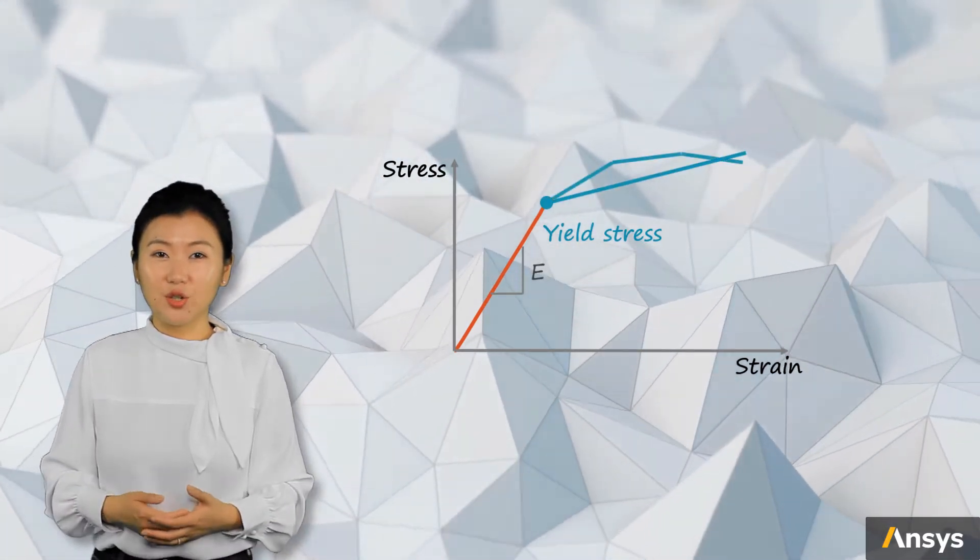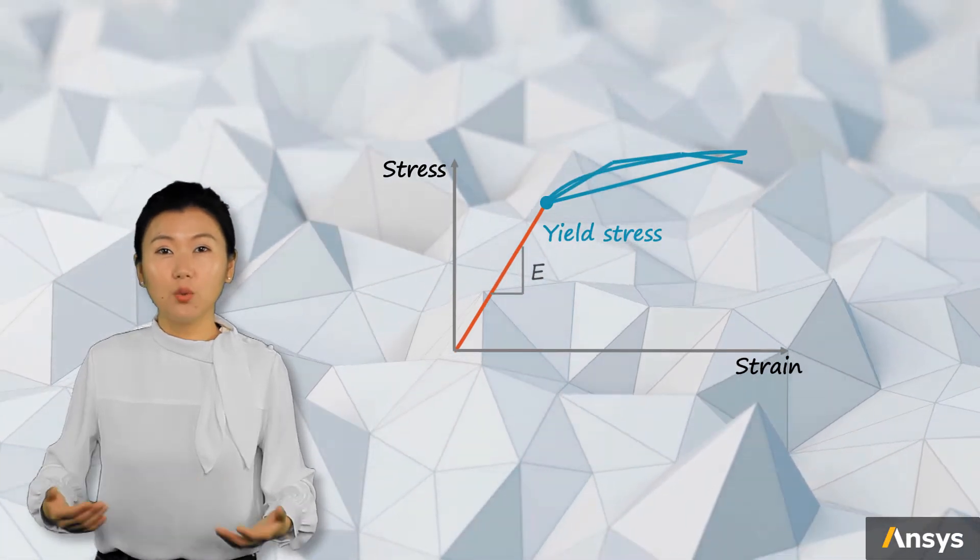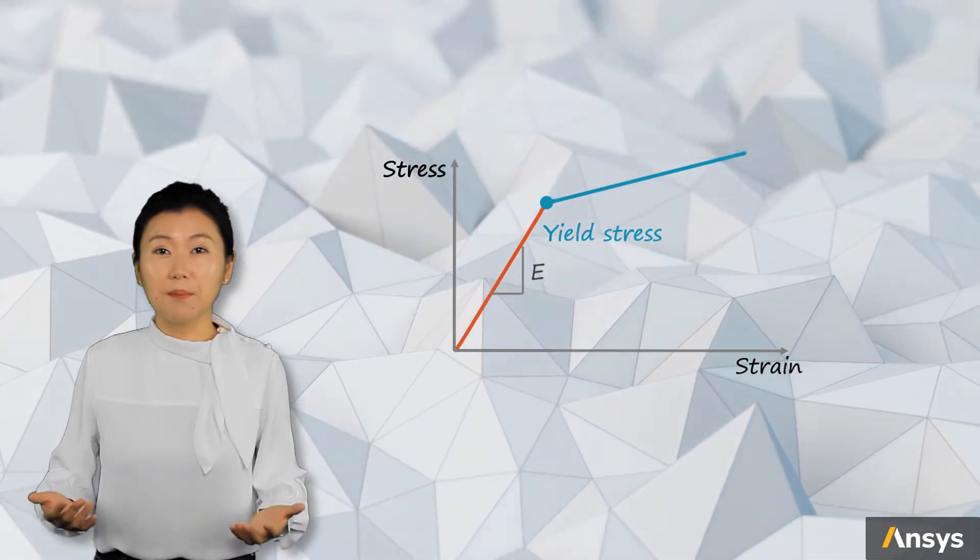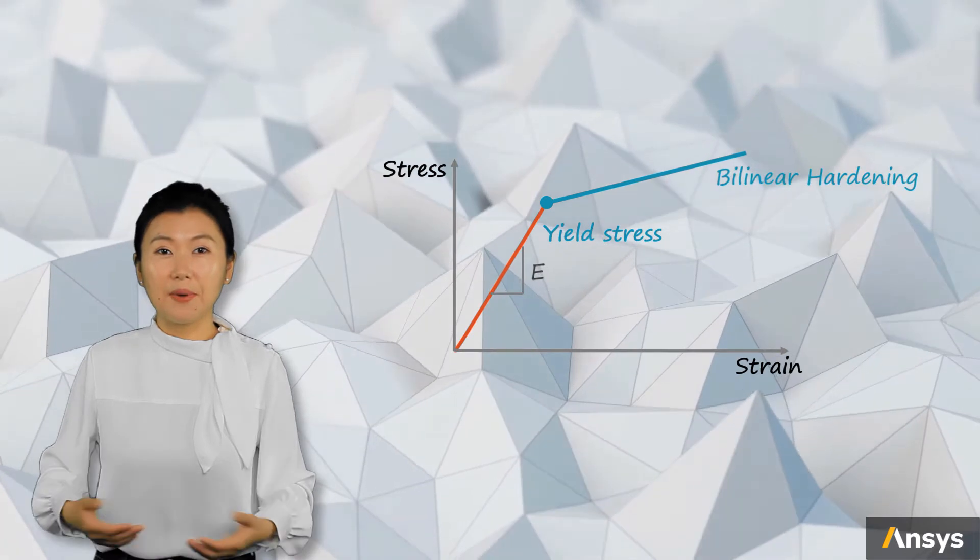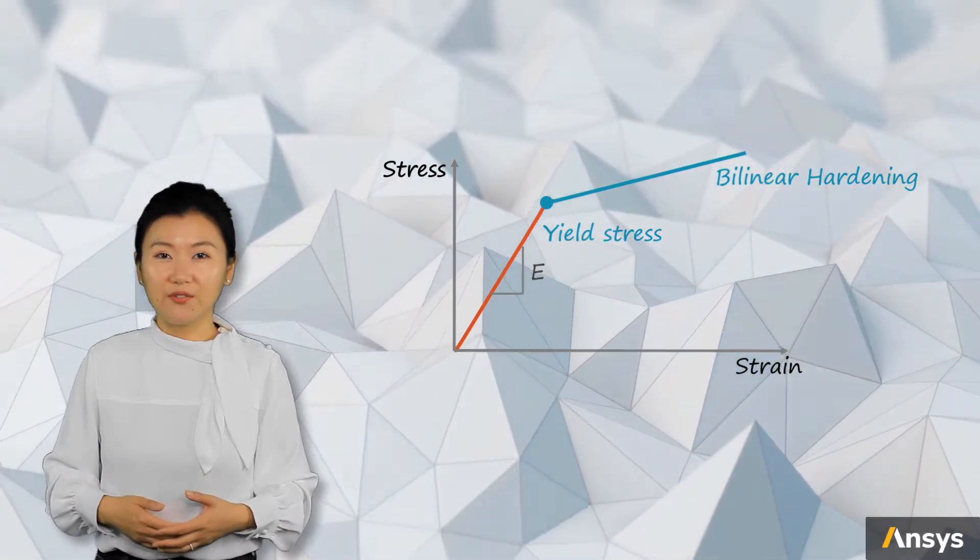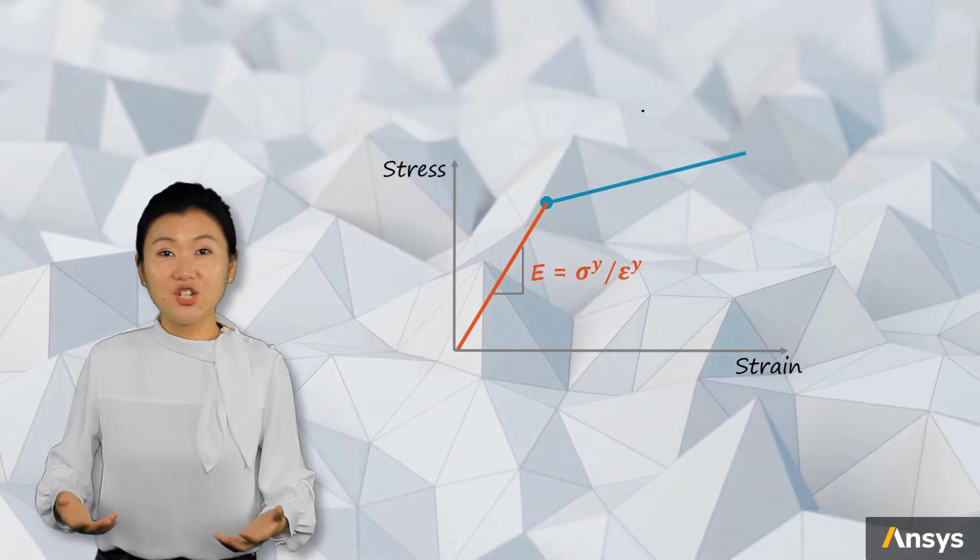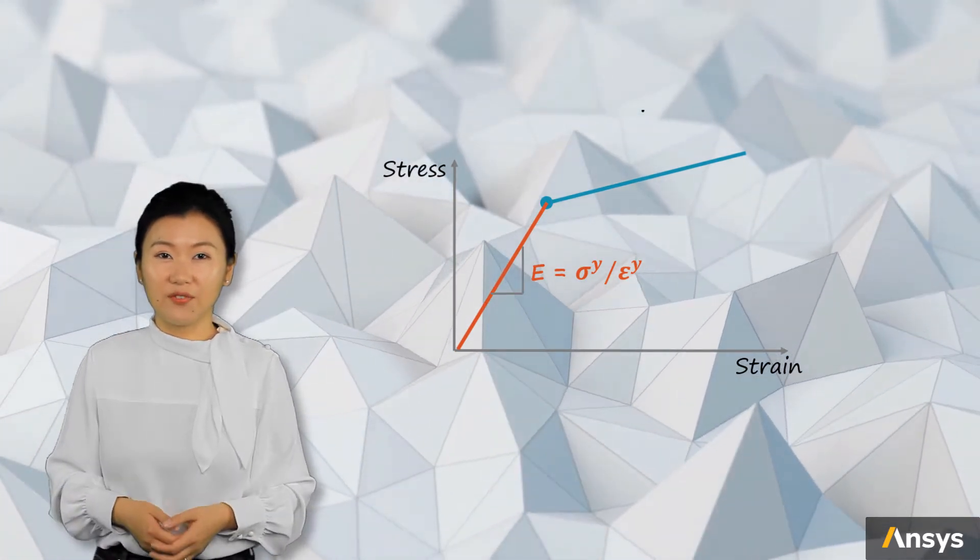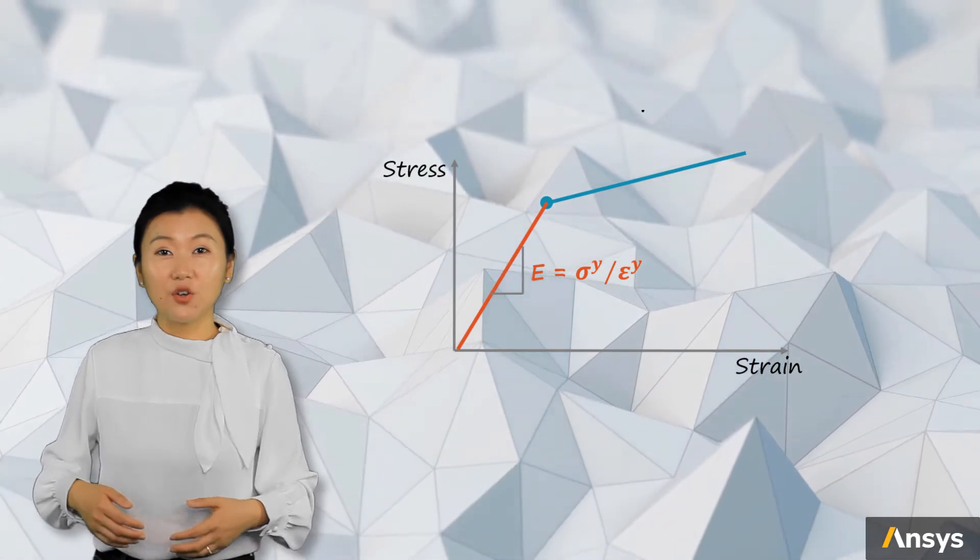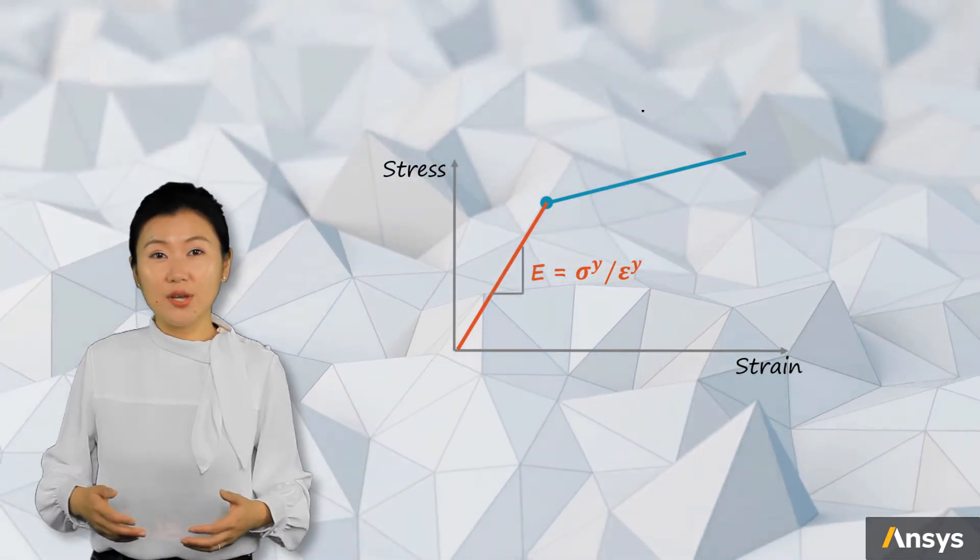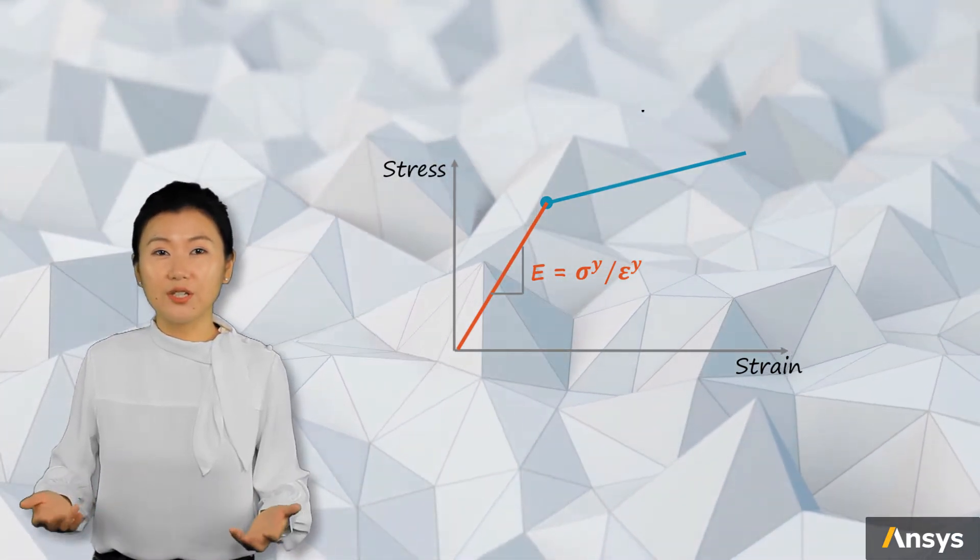There are different ways to do curve-fitting for data. Here, we will show the simple steps to define bilinear hardening. Basically, we need to find two moduli for bilinear hardening. The first one is the Young's modulus E. It is the tangent of the initial linear part of the material. You can calculate Young's modulus from the stress and strain value at the yield point you choose.